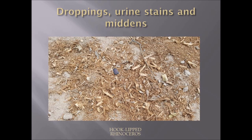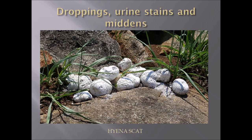Here we have a hook-lipped or black rhino midden, made up of vegetable matter since the black rhino is a browser — it will have sticks and parts of leaves in its droppings. The white rhino feeds on grass, so its droppings would contain grass. They also bite off twigs at a 45-degree angle with their molars, and you can see those pieces of twigs bitten off at 45 degrees.